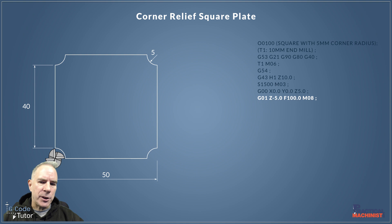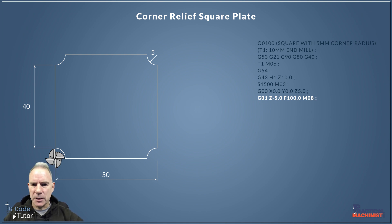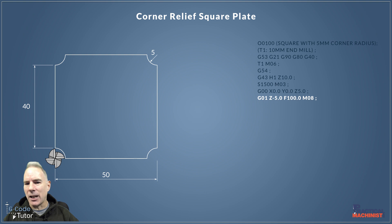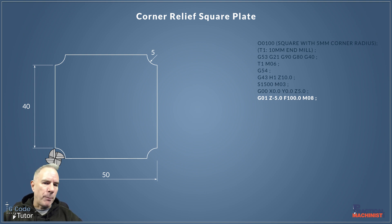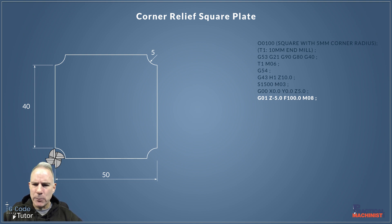Now we're going to do a G01 move. This is where we start to control the feed rate using an F value — we're using F100. The speeds and feeds are just figures I've put in for teaching purposes; I haven't decided on a material. We've also got M08 at the end to turn on the coolant as the cutter comes down to depth, and we're taking a 5mm deep cut.